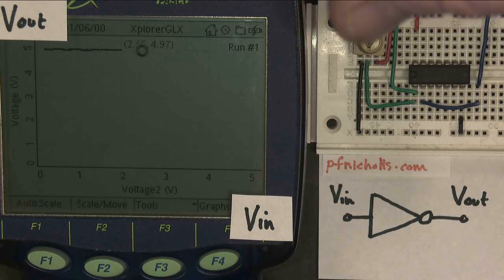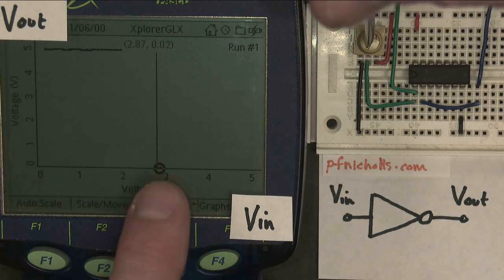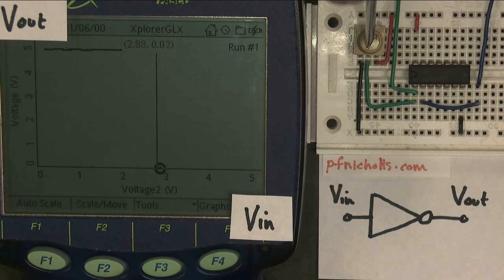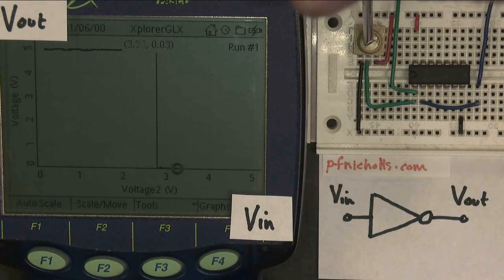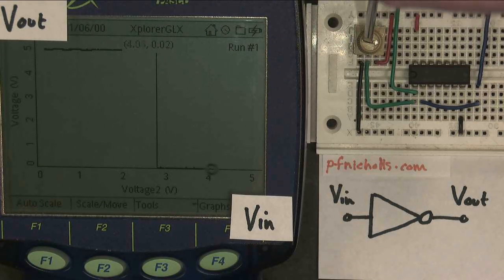And then when I get to the point where the input becomes logic 1, so in this case just under 3 volts, the output changes very sharply, very very quickly. There was no doubt about it. It was either logic 1, or it was then immediately logic 0.